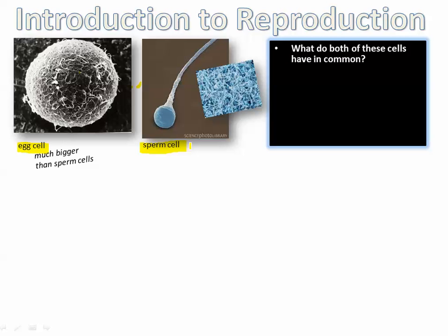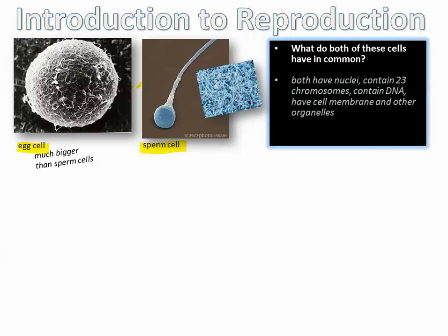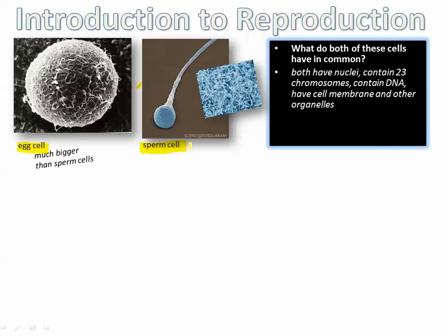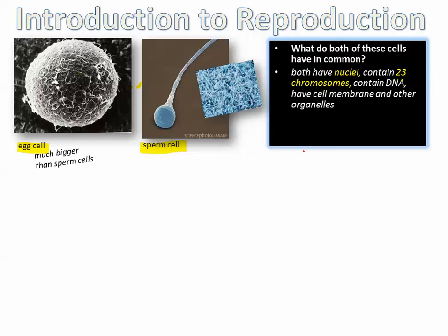What do both of these cells have in common? Think about it for a second — you can pause right here and try to make a list for yourself. Well, they both have genetic information. Nuclei is a fancy way to say more than one nucleus. They both have a nucleus, and they contain 23 chromosomes. This is a very important number to remember: 23 chromosomes.